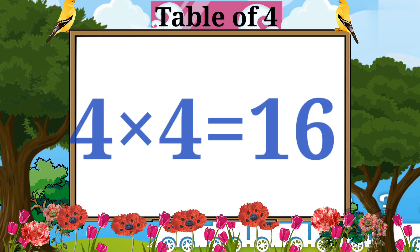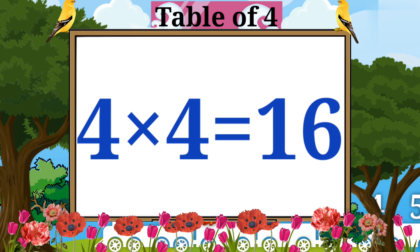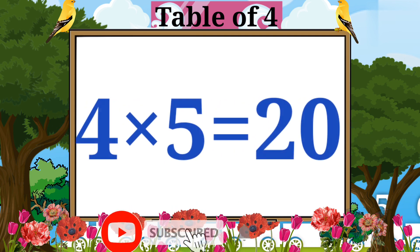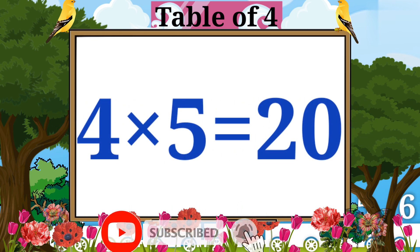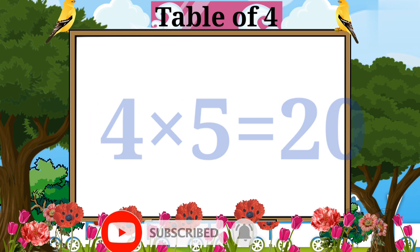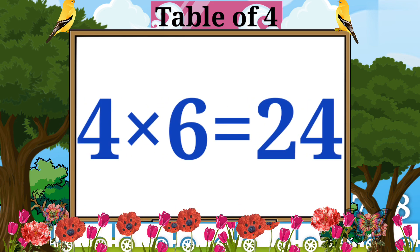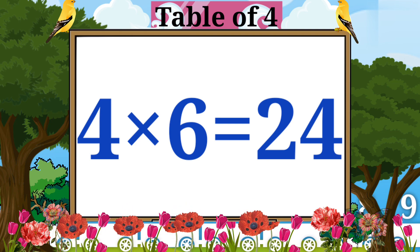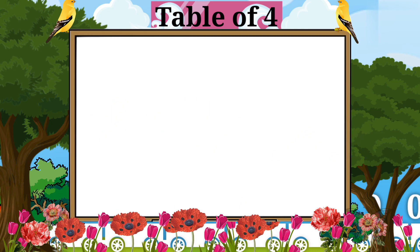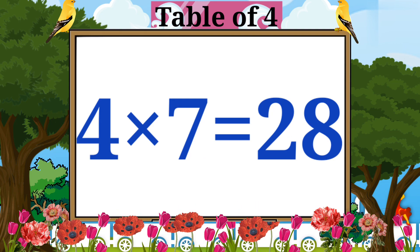Four threes are twelve. Four fours are sixteen. Four fives are twenty. Four sixes are twenty-four.